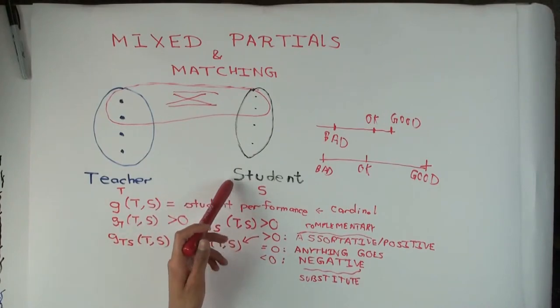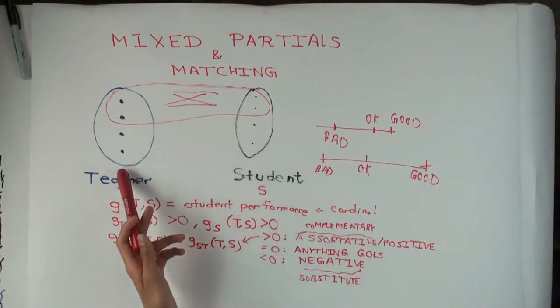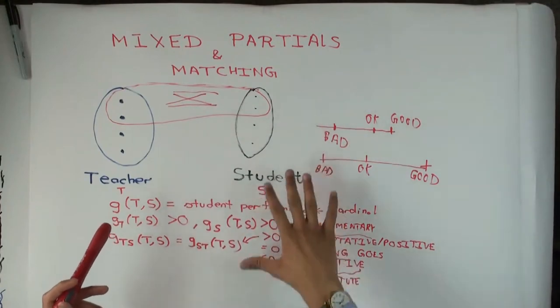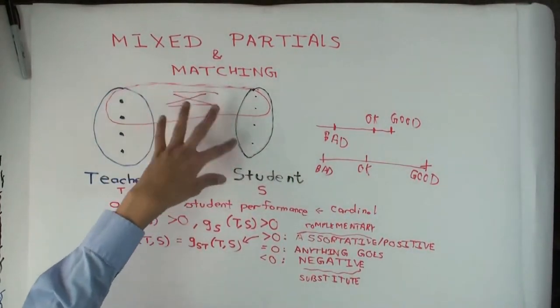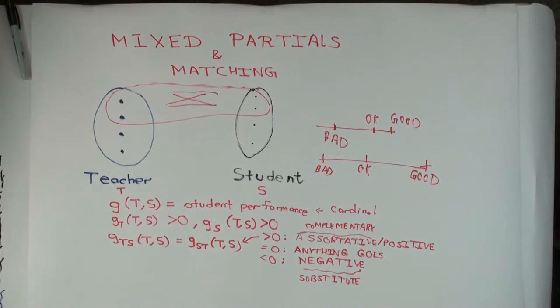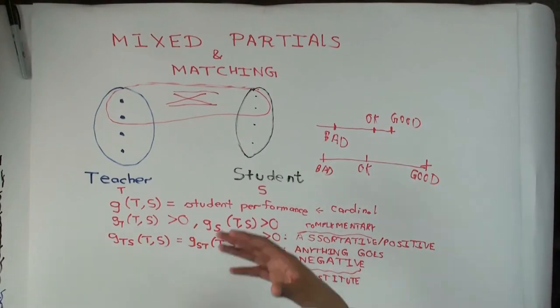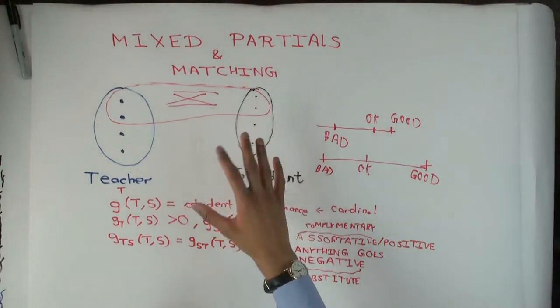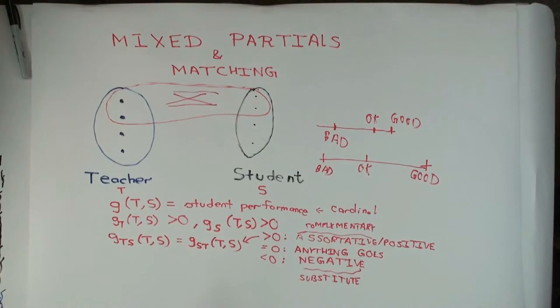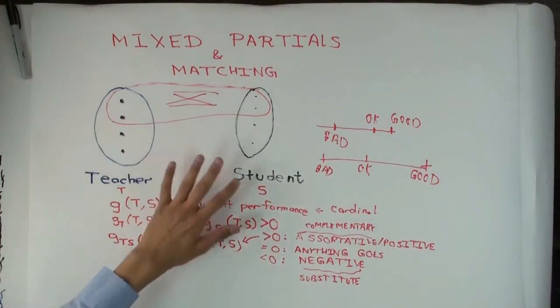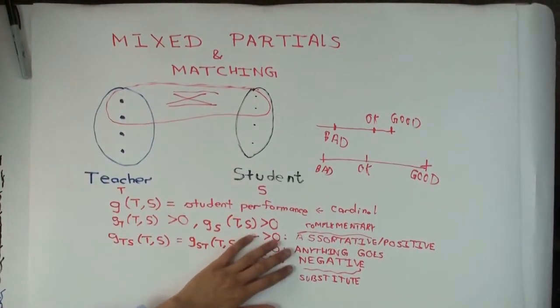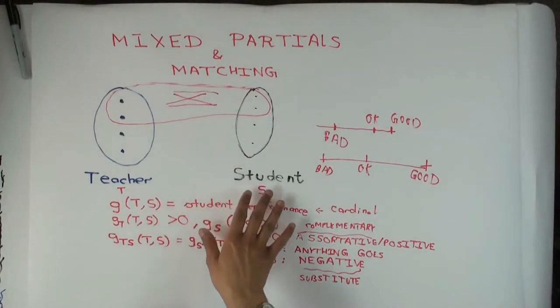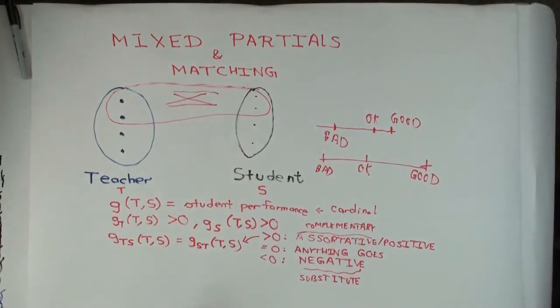One way you could do this is to imagine there's a utilitarian dictator who looks at all the data, does mathematical calculations, and figures out whom to pair with whom. But the other question is: how would you imagine this happening in a free market or voluntary negotiation way? Would you expect these conclusions hold if people are voluntarily negotiating, as happens in the marriage market and maybe in the teacher-student market as well?